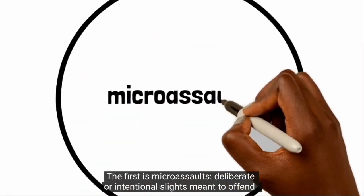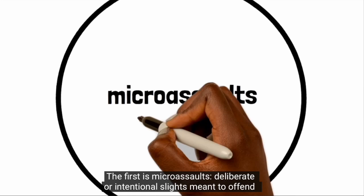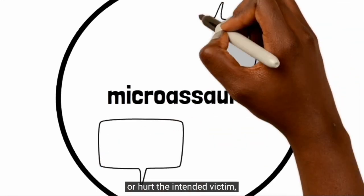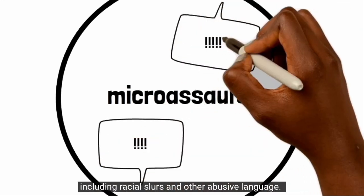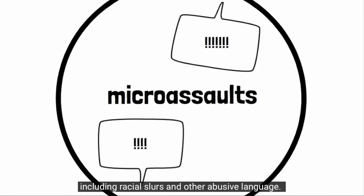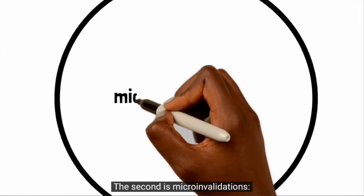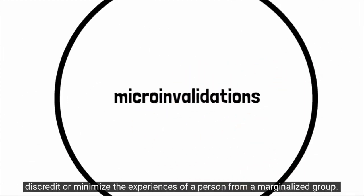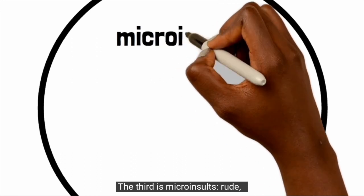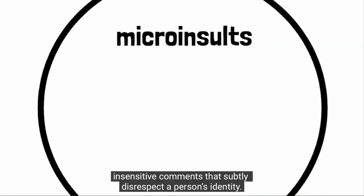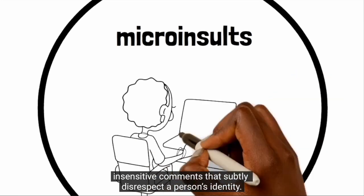The first is microassaults: deliberate or intentional slights meant to offend or hurt the intended victim, including racial slurs and other abusive language. The second is microinvalidations: the attempt to discredit or minimize the experiences of a person from a marginalized group. The third is microinsults: rude, insensitive comments that subtly disrespect a person's identity.